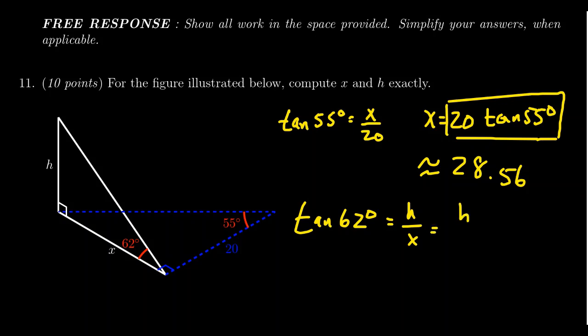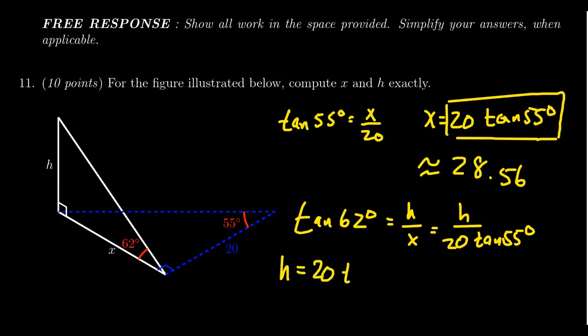X we now know is 20 times tangent of 55 degrees. Using the exact answer to solve for H, we clear the denominators and get H equals 20 times tangent of 55 degrees times tangent of 62 degrees.